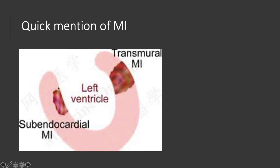In a sub-endocardial infarction, the inside of the heart or endocardium is most likely to be affected. Contrast that to a STEMI where there is complete blockage of a coronary artery. Because there is virtually no blood supply going to that area of the heart, the whole thickness of the heart muscle becomes ischemic or infarcted. That is what we call a transmural infarct.